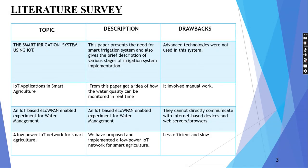The literature survey covers several topics. Smart irrigation system using IoT had the drawback that advanced technologies were not used. IoT agriculture in smart agriculture involved manual work. An IoT-based 6LoWPAN-enabled experiment for water management had the drawback that it cannot directly communicate with web-based devices and web servers or browsers. A low-power IoT network for smart agriculture had the drawback that it is less efficient and slow.